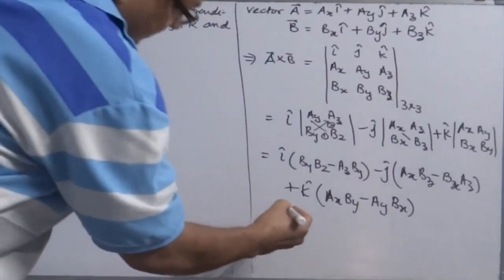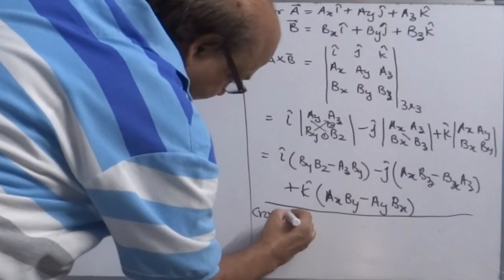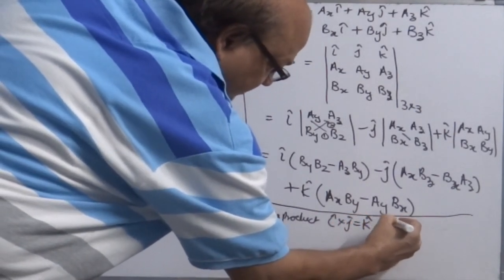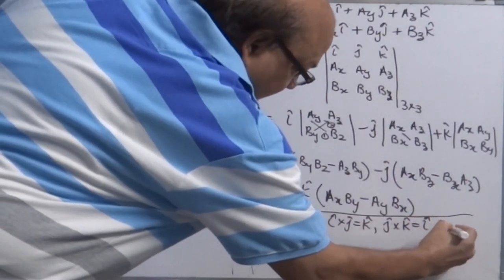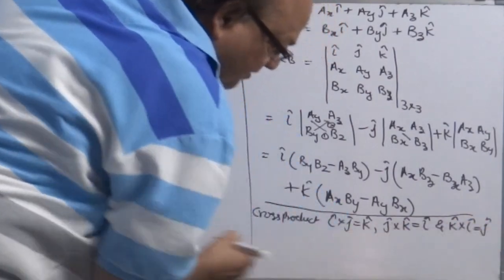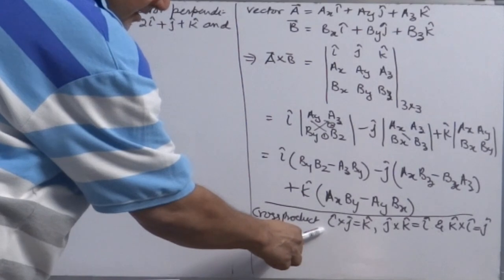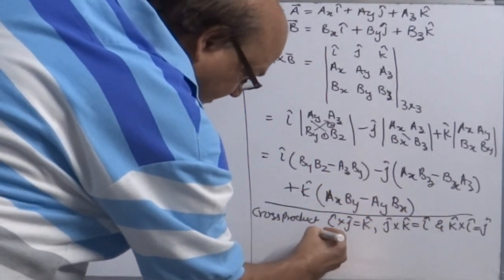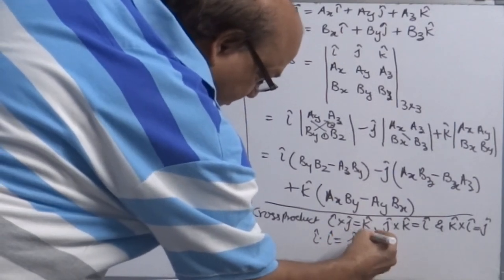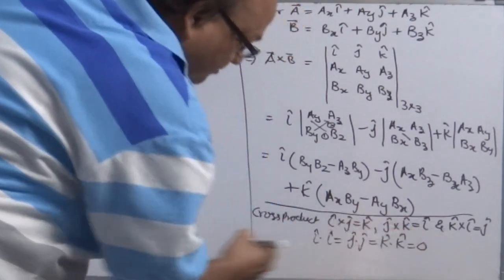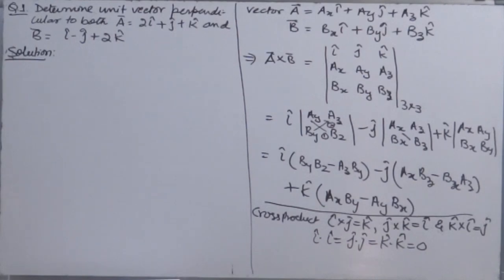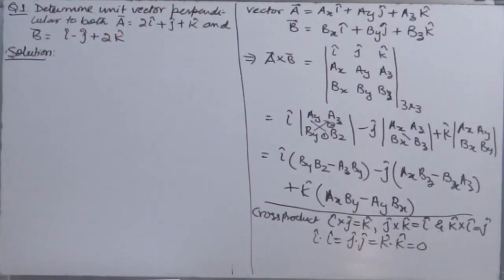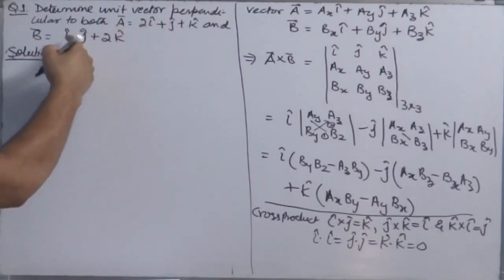The cross product identities are: i cross j equals k, j cross k equals i, k cross i equals j. Reversing the order: j cross i equals minus k, k cross j equals minus i, i cross k equals minus j. Also, i cross i, j cross j, k cross k are all zero. You can use this identity method by multiplying to obtain nine terms, then apply the identities. But I think the determinant method is easier.